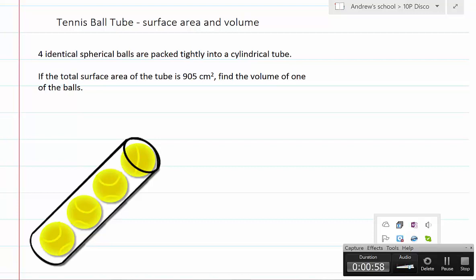OK, well we're asked to find the volume of one of the balls and we're going to need the radius of the ball, so we're going to need to find the radius of one of the balls. The problem is we don't have that information. We're told the surface area of the whole tube.